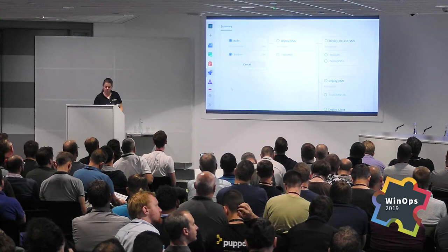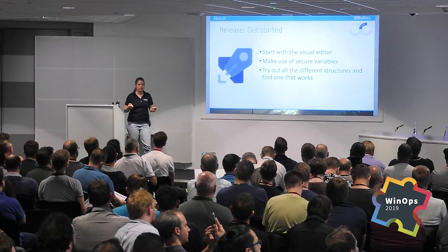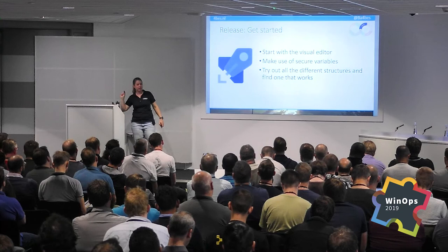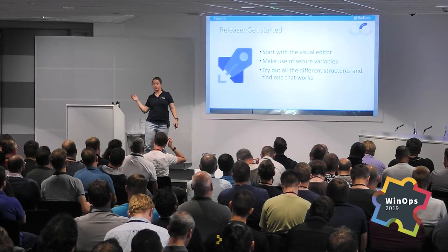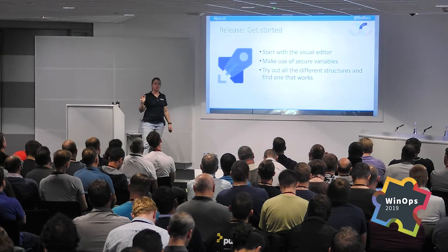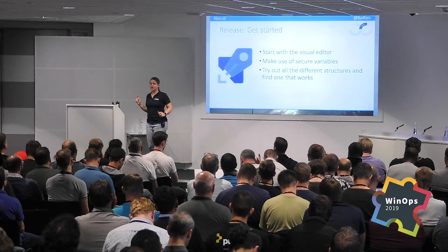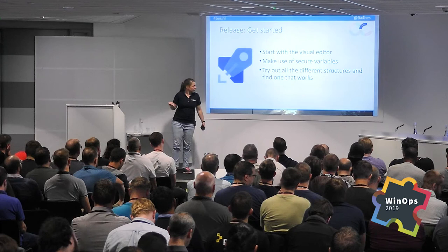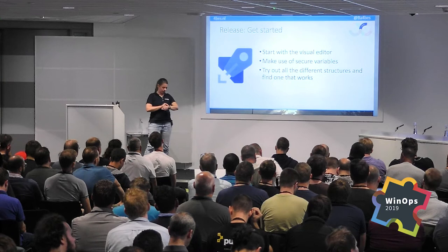That's one use case — there are a lot of use cases for release pipelines. If you get into this, start with the visual editor and use the 'Show YAML' button on every step, because it helps you learn YAML and also helps you visualize what's actually happening. Make use of variables, and there are secure variables available — tick a box and the variable value won't be visible to anyone running the pipeline. You can also use Azure Key Vault for your secure variables.